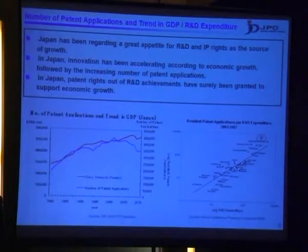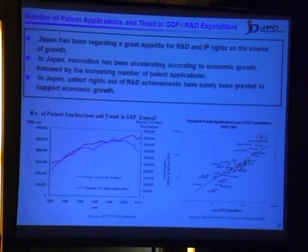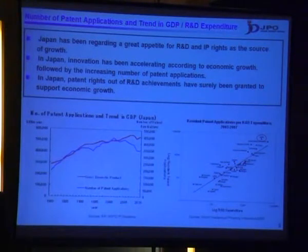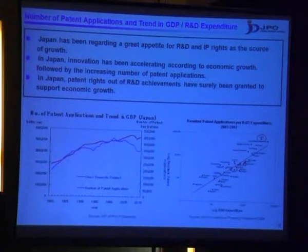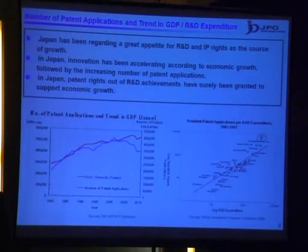Let me analyze the economic growth and its basis in Japan in recent years. On the graph on the left, the blue line shows GDP and the red one shows the number of patent applications. As you can see, there is a very close positive correlation between GDP and the number of patent applications. Innovation has been accelerated along with economic growth. Japan has been spending a large amount on R&D activities while filing a large number of patent applications, utilizing R&D results as a driving force of economic growth.